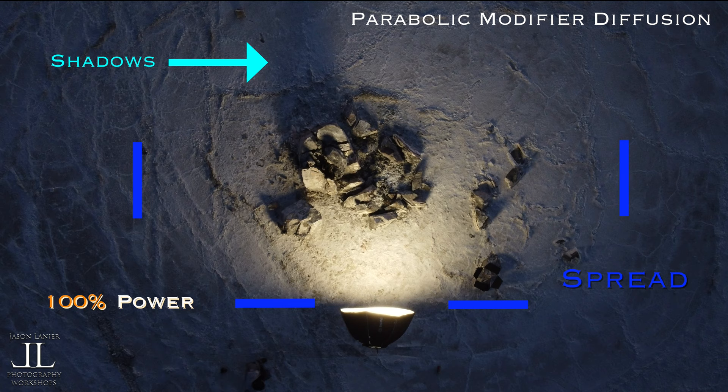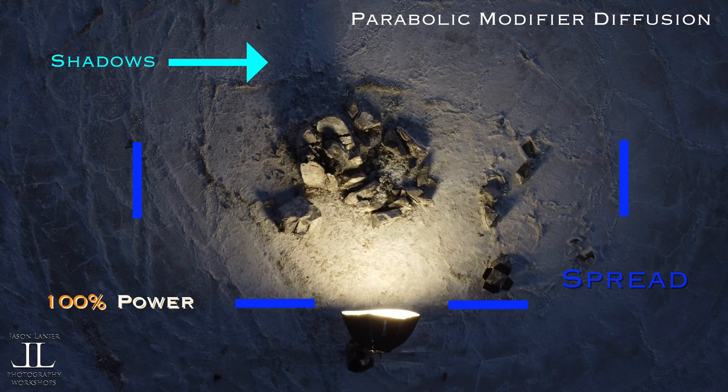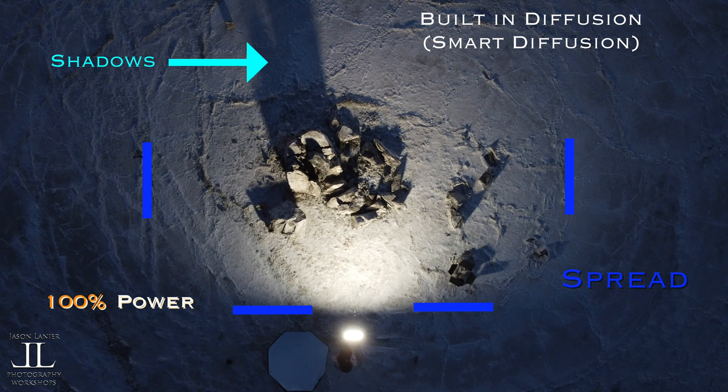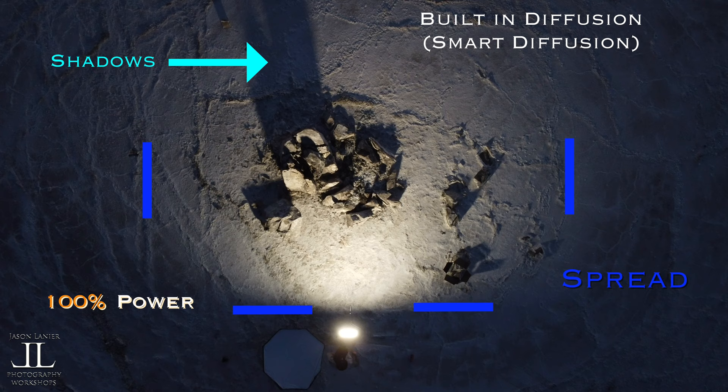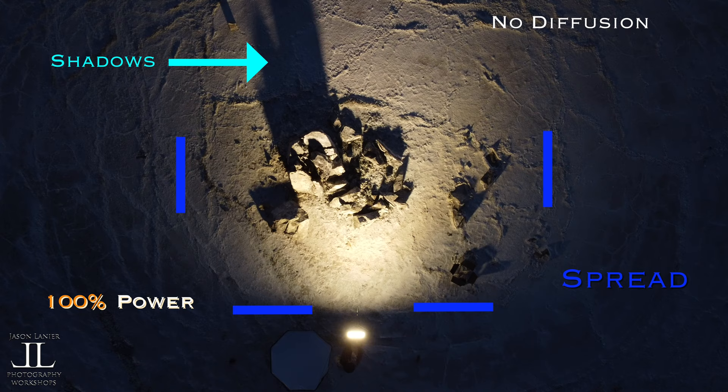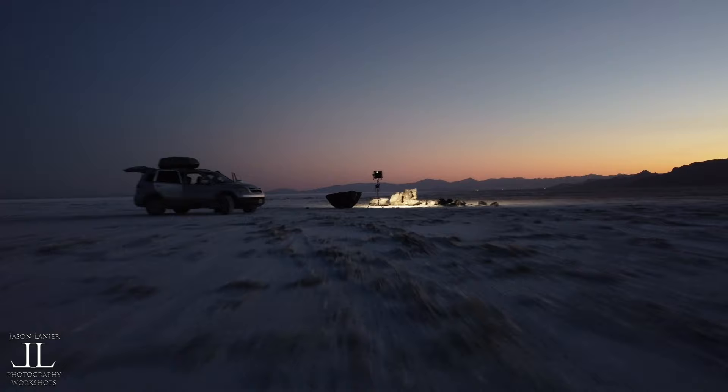Let's take a look at it from a bird's eye view to start. The first example is with the seven-foot parabolic — this spreads the light the furthest as well as softens it the most. Look at the spread of the light as well as the soft shadows as they fall off behind the rock. The second example is with built-in diffusion called smart diffusion. Without the modifier, the spread decreases and the shadows get harder or darker as you see behind the rock. The third example is with no diffusion — the spread of the light shrinks even more and the shadows get even harder. These examples with the rocks have direct correlations to how they will appear on people or groups when taking their images.